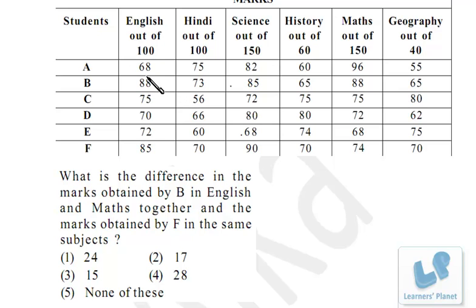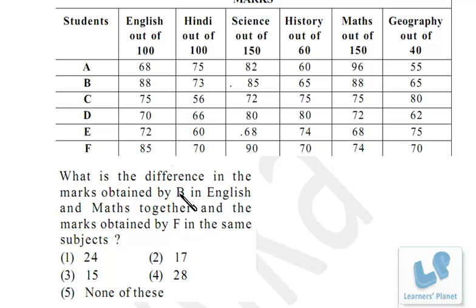In English, the base of the percentage is 100 and the total marks are also 100, so we can directly get the difference between B and F. B is 88, F is 85, so B has plus 3. The percentage difference is 3 and the marks difference is also 3. Since B has more marks, we take it as plus 3.